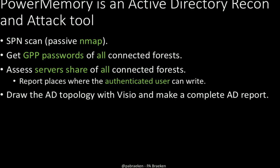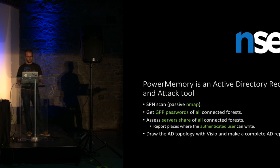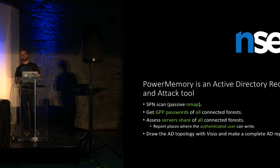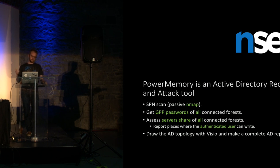You can inject this identity pretty easily, perform pass-the-token attacks, and protect processes. Because I also like Active Directory a lot, PowerMemory can do a lot of things for recon: SPN scanning, which is very useful when you want to find all SQL servers or file servers in the domain. You just ask the domain controller once — show me all your SQL servers — rather than running noisy nmap scans.